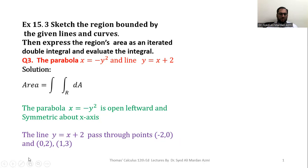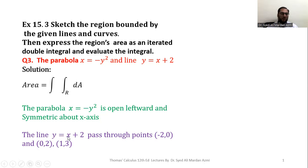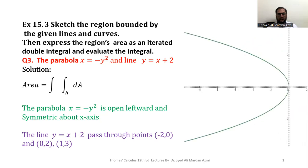The line y = x + 2 passes through the points (-2, 0), (0, 2), and (1, 3). You can evaluate these points by substituting different values of x into the equation. For example, substituting x = -2 gives y = 0; substituting x = 0 gives y = 2; substituting x = 1 gives y = 3. To plot a straight line we need at least two ordered pairs in the coordinate plane.